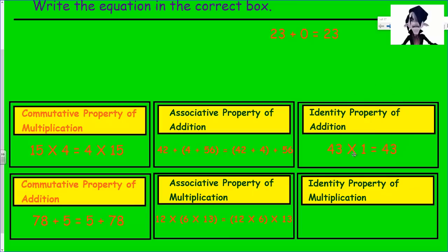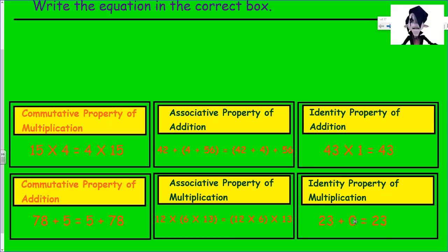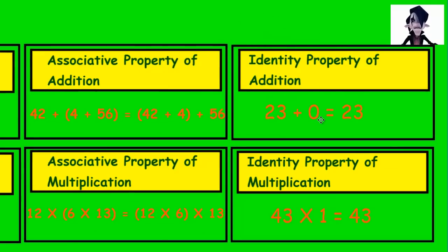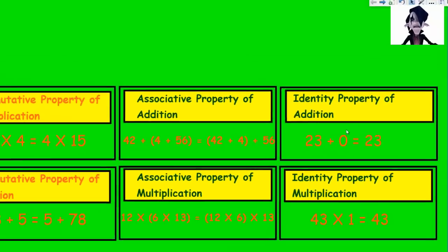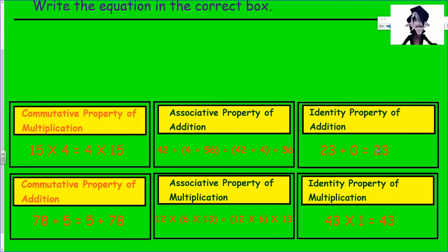Finally, we have the identity property. It states that whatever you multiply or add, you get that same number back. For example, 43 times 1 is always going to give you 43 — any number multiplied by 1 always gives you that number. This is the identity property of multiplication; it doesn't change the identity. And 23 plus 0 gives that same number back — that's the identity property of addition. So 1 plus 0 equals 1, 5 plus 0 equals 5.